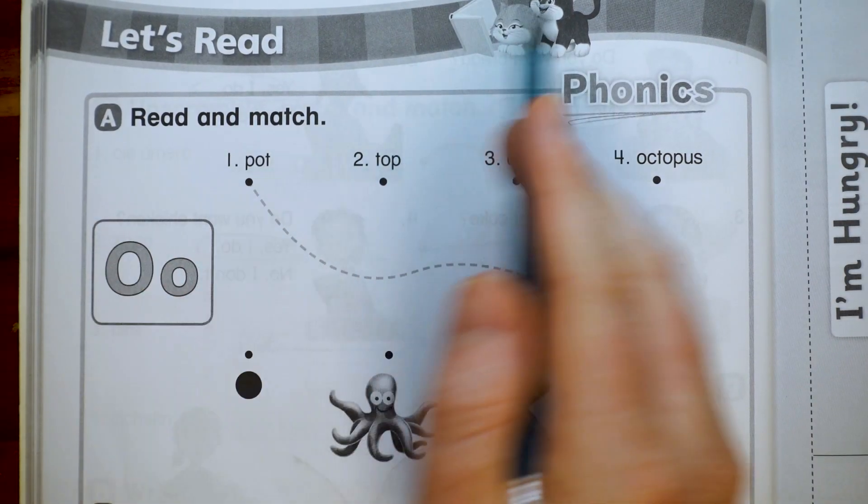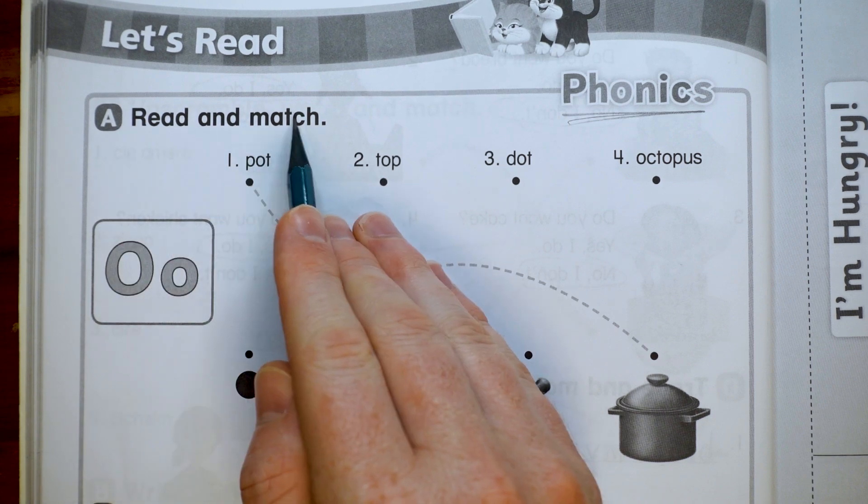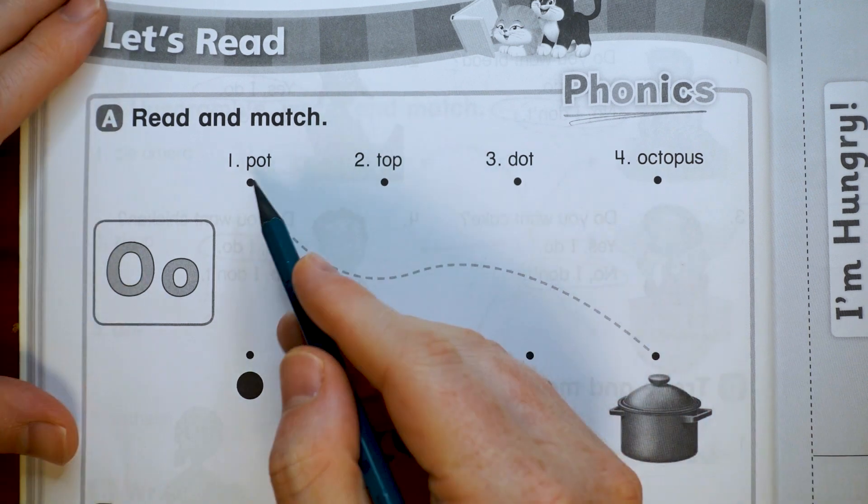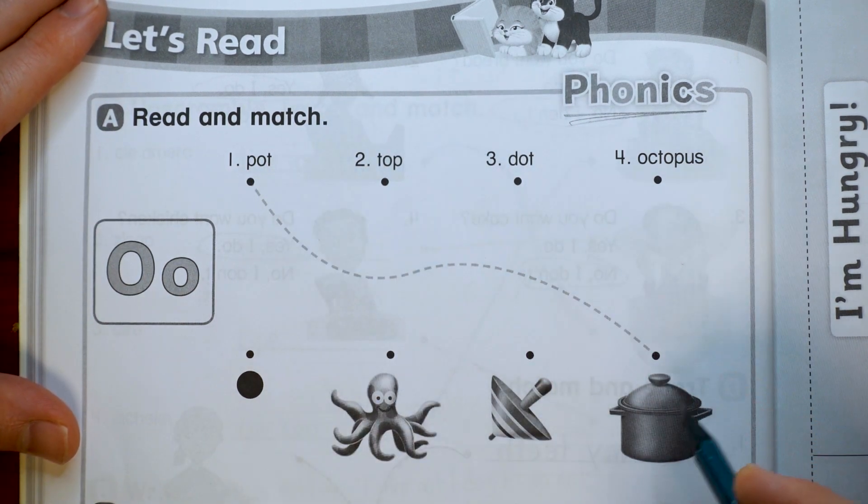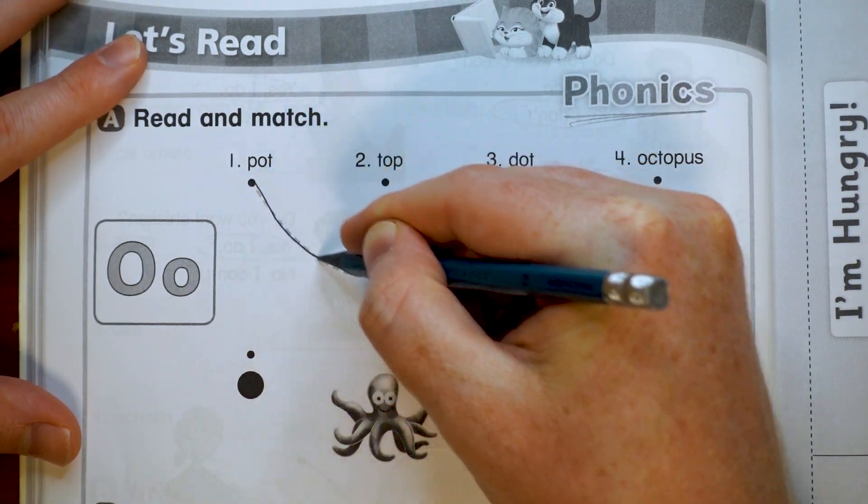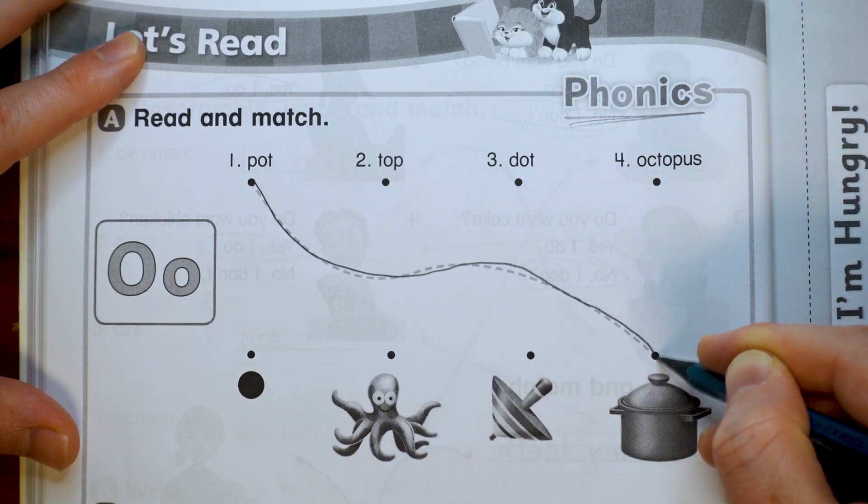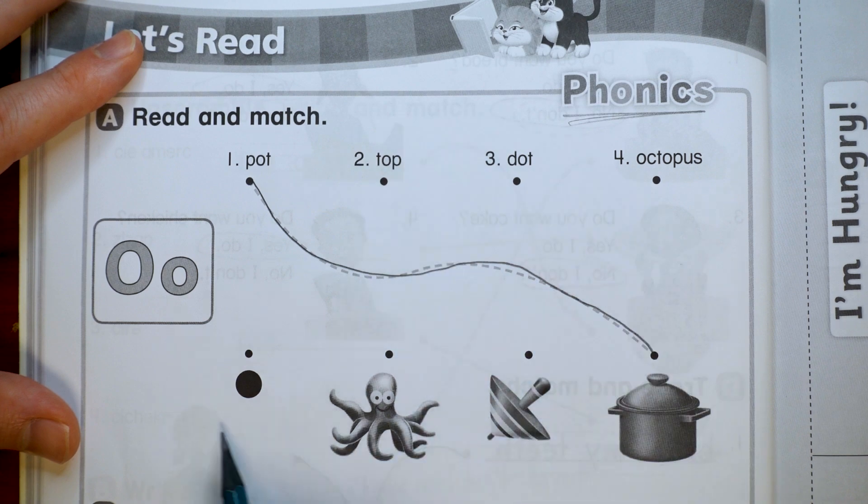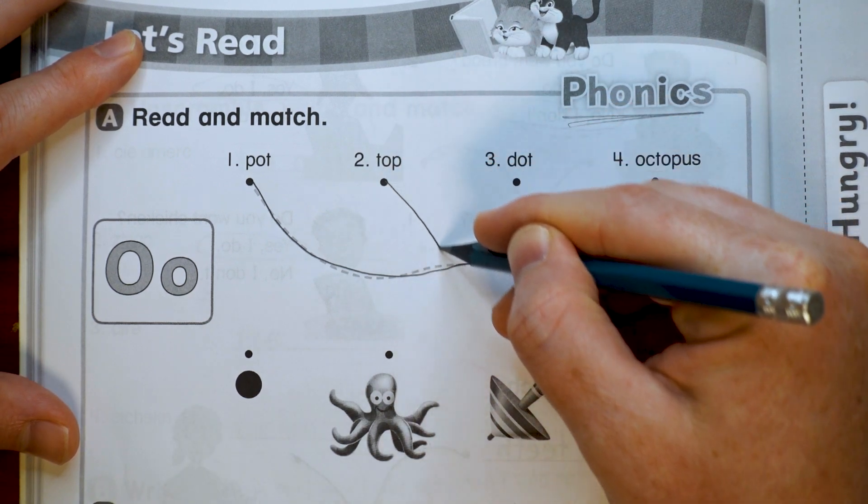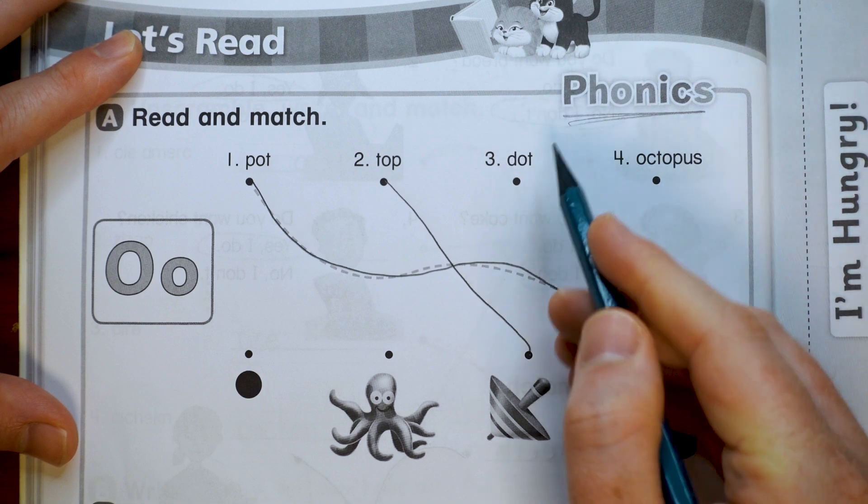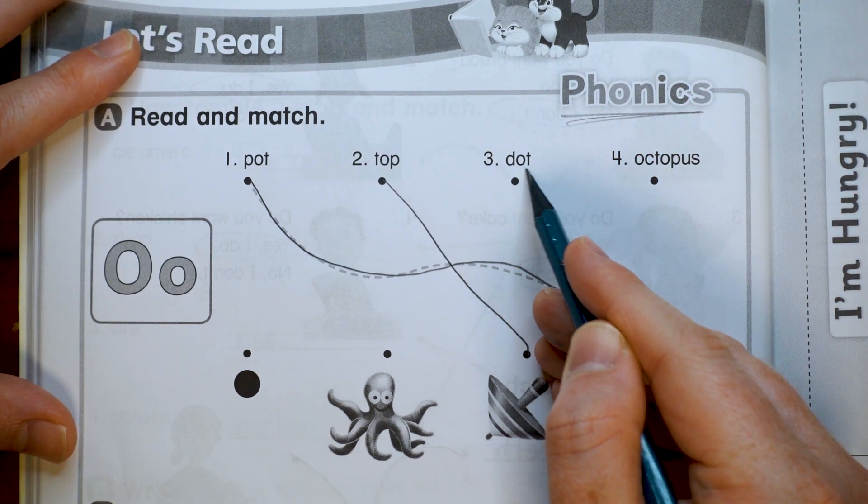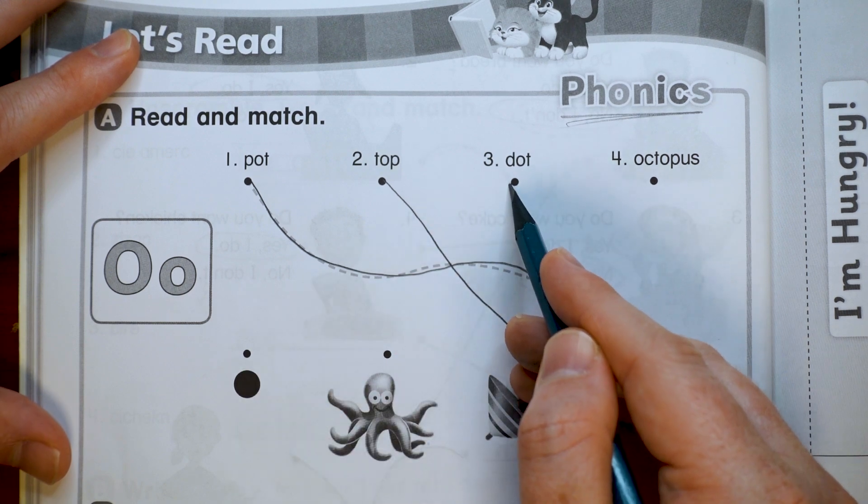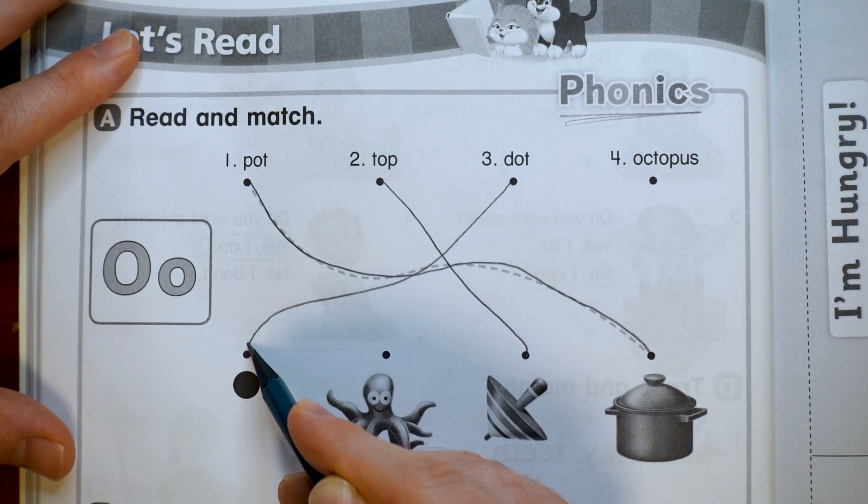All right, let's start. It says read and match, so let's read the words and then draw a line to the pictures. Pot - there's a pot, I use it when I cook spaghetti. Top - there's a top, it's a fun toy to play with.